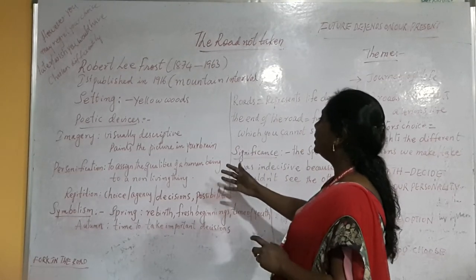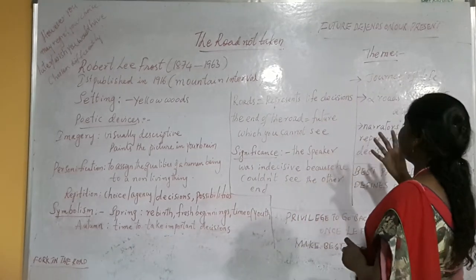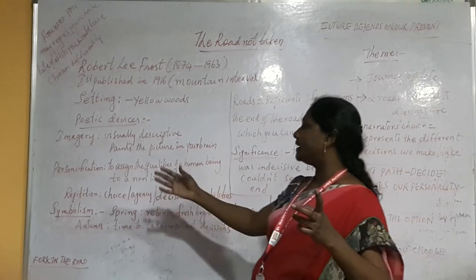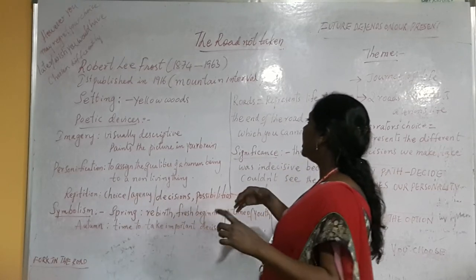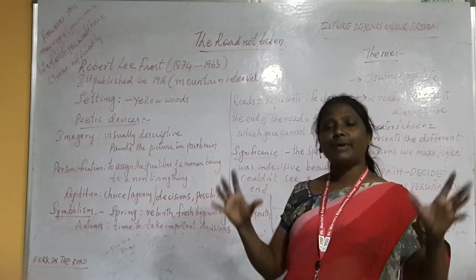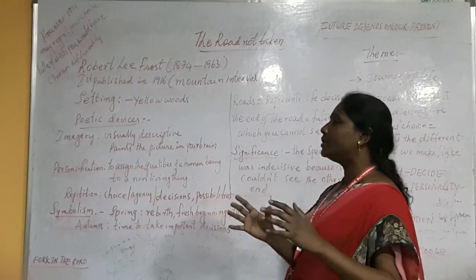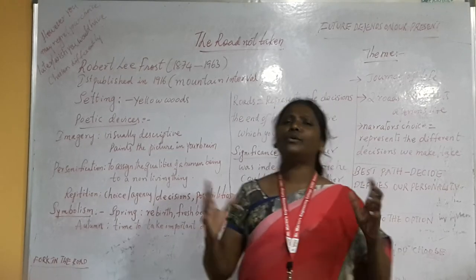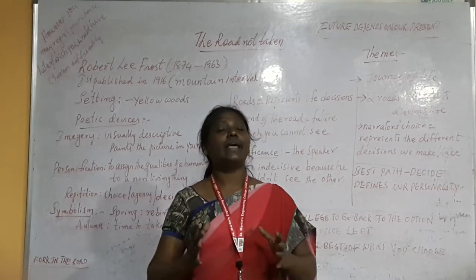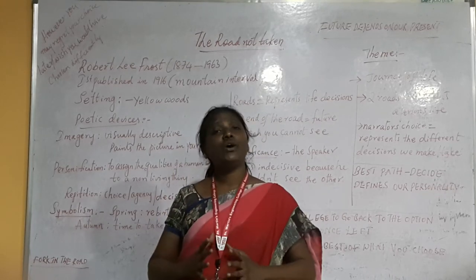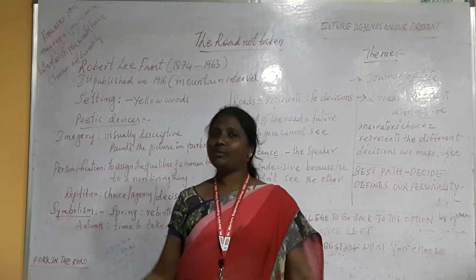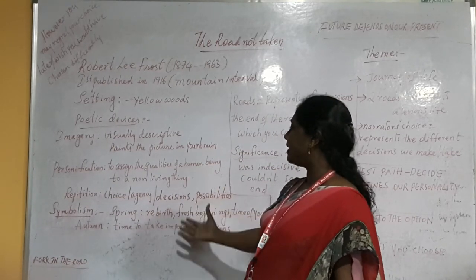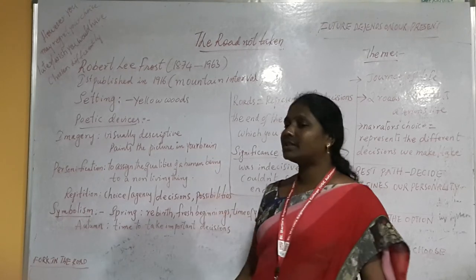We are talking about the main themes of the poem — the journey of life — where the poet has used different poetic devices like imagery, personification, repetition, and symbolism. All these devices give a vivid picture and setting of the poem and also tell us the importance of decision-making skills in our real life situations. It is not all about which road to choose — it is about the journey of life that the poet wanted to stress on.